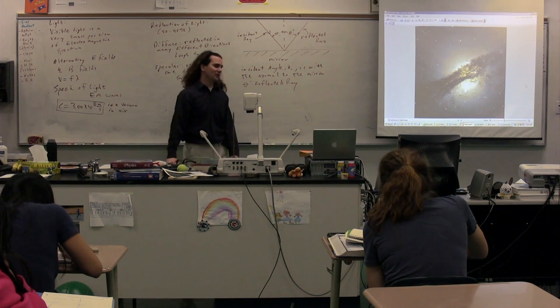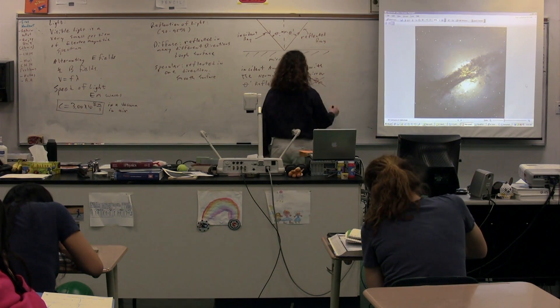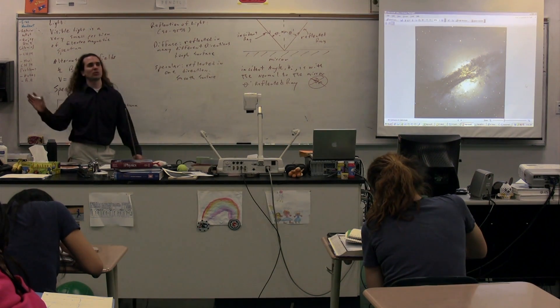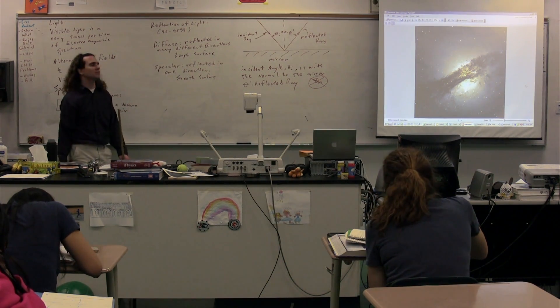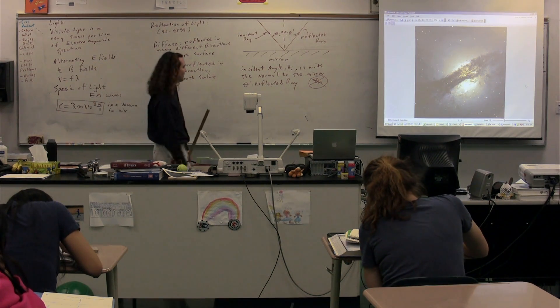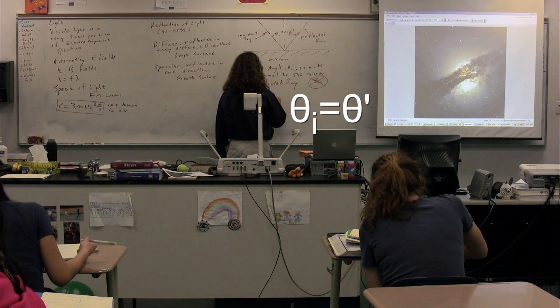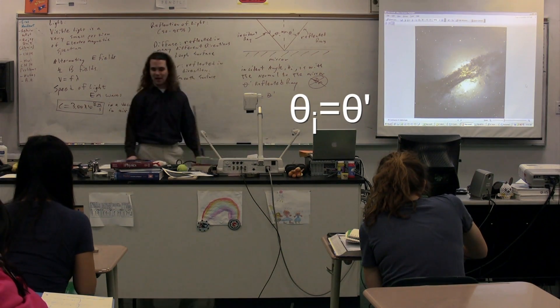Please do not use theta sub r. Theta sub r is for the refracted ray. We're going to use that in chapter 15. Theta prime is for the reflected ray. The incident angle is always equal to the reflected angle.